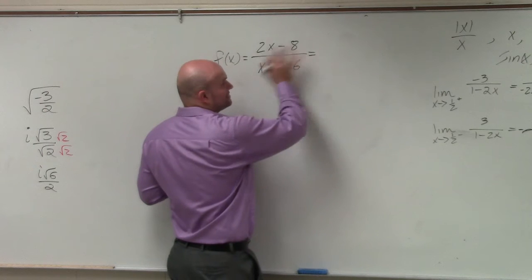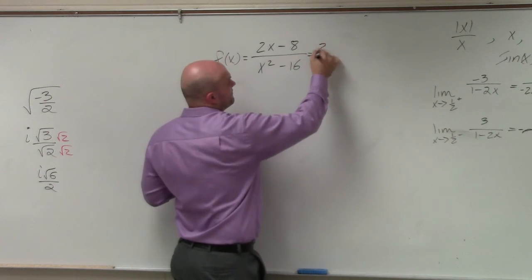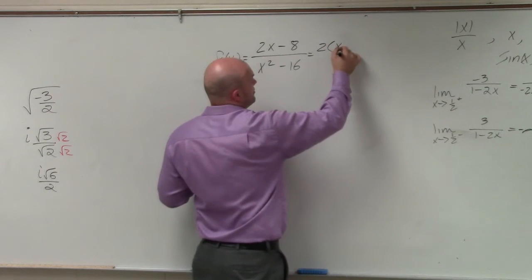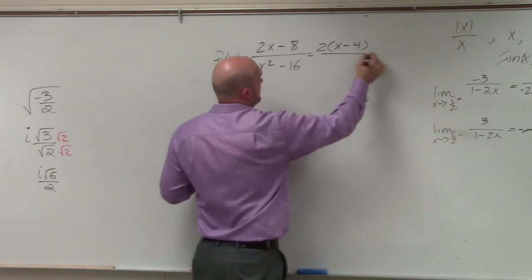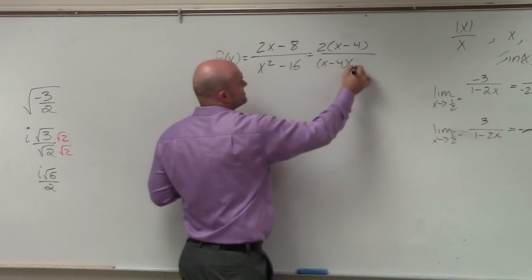So what we can do then is factor our numerator and our denominator. If I factor out my numerator, I factor out a 2, I'm left with x minus 4. And if I factor out my denominator, I'm left with x minus 4 times x plus 4.